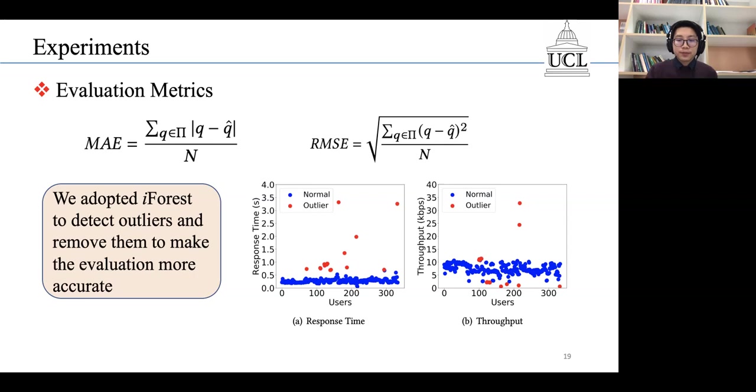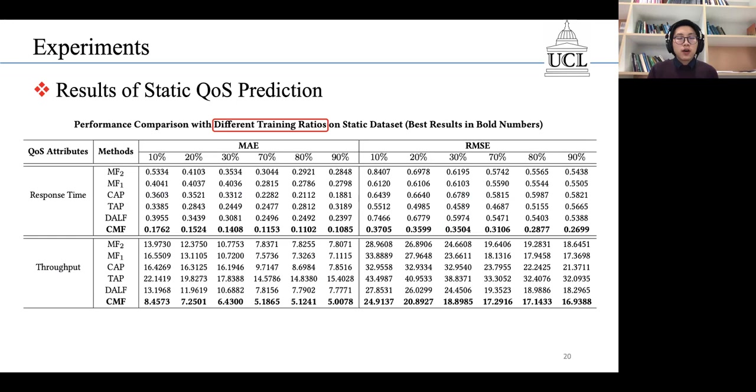We first report the results of static QoS prediction. In this table, we show the performance with different training ratios. We can see that our approach consistently shows the best performance in all the cases.